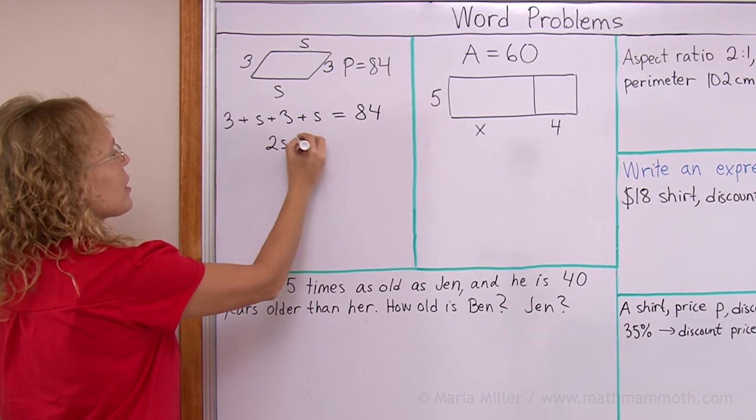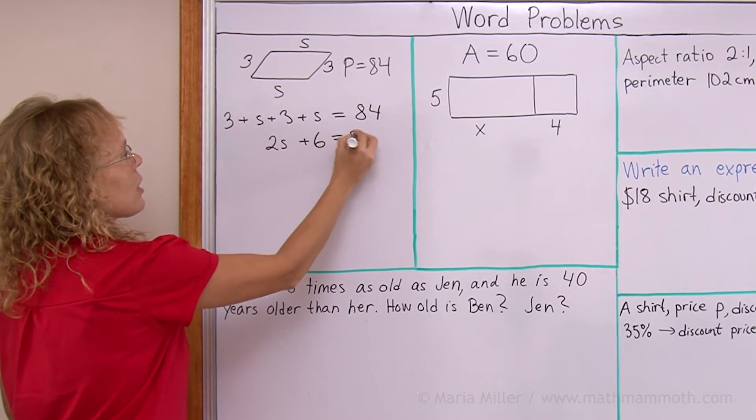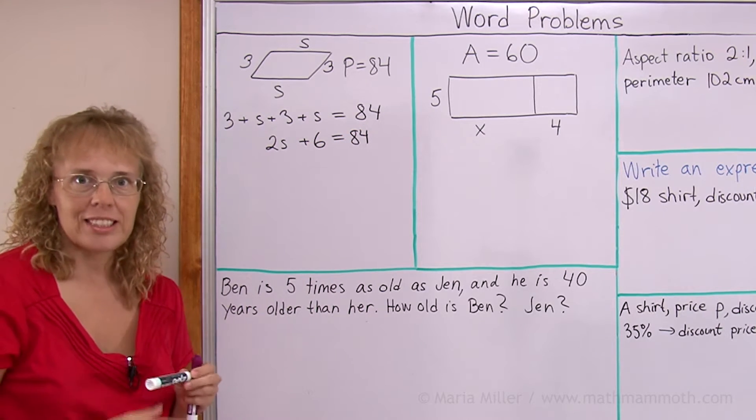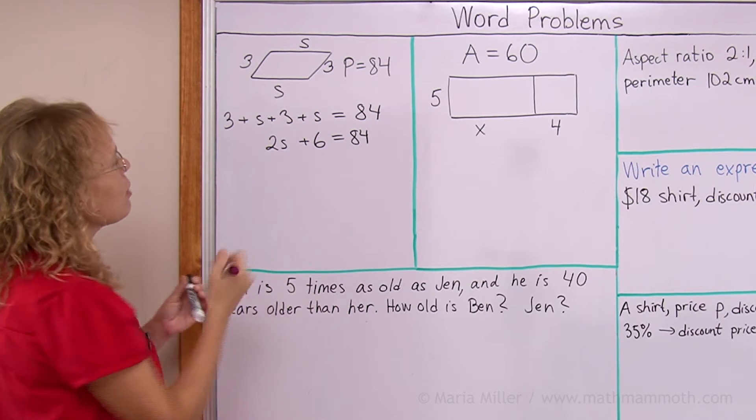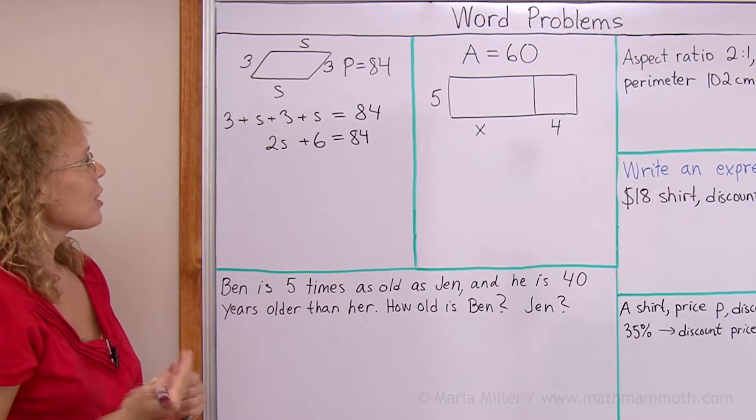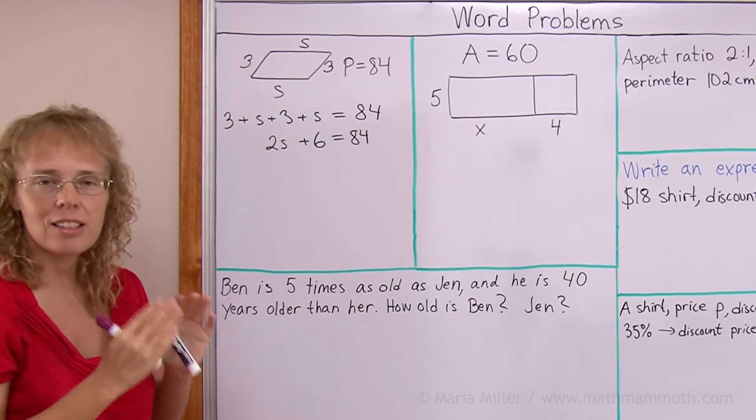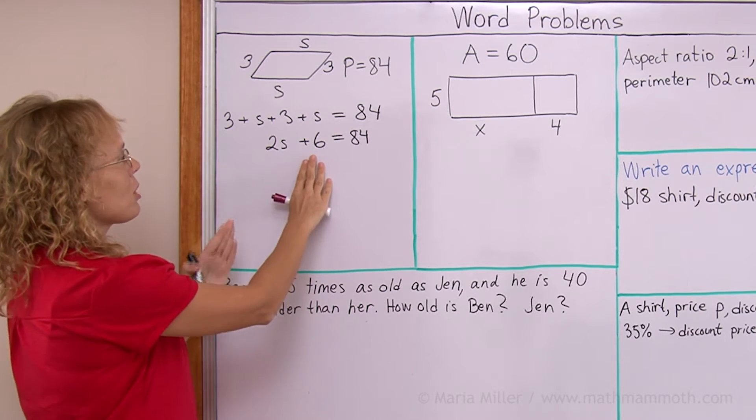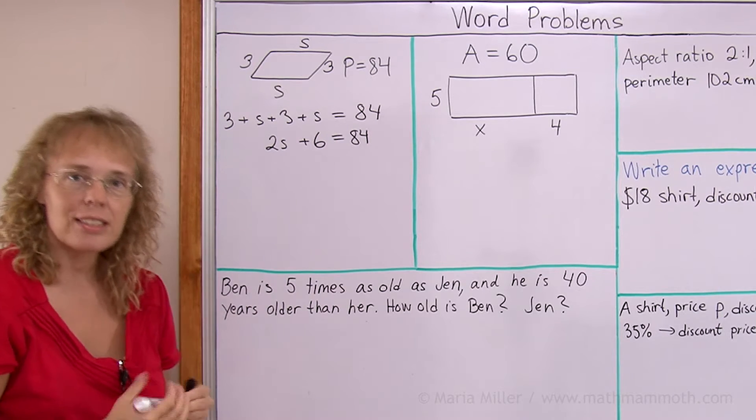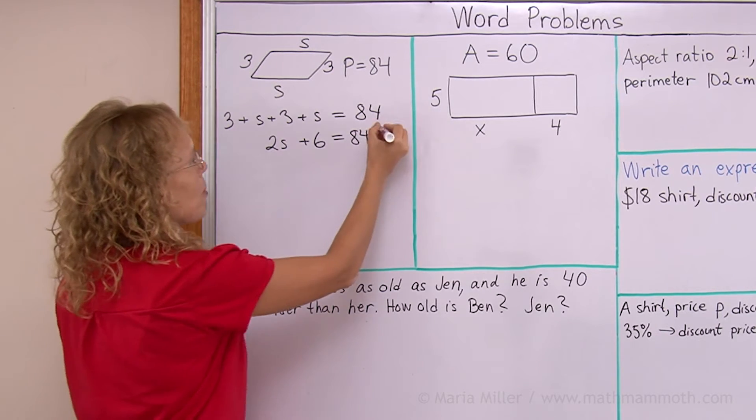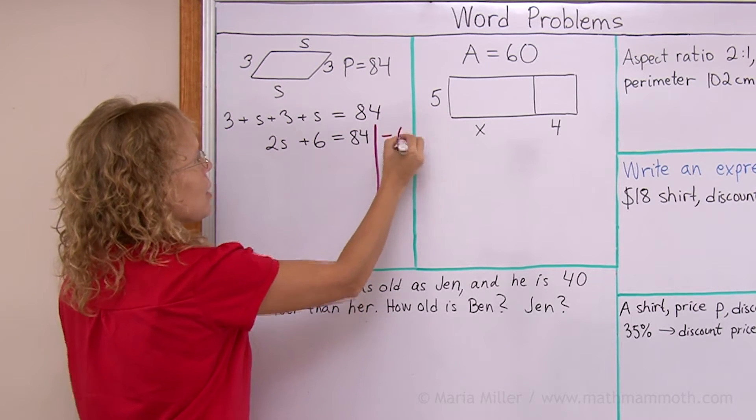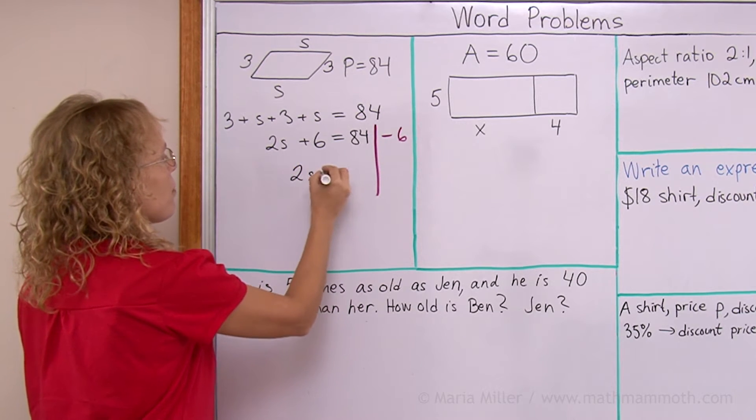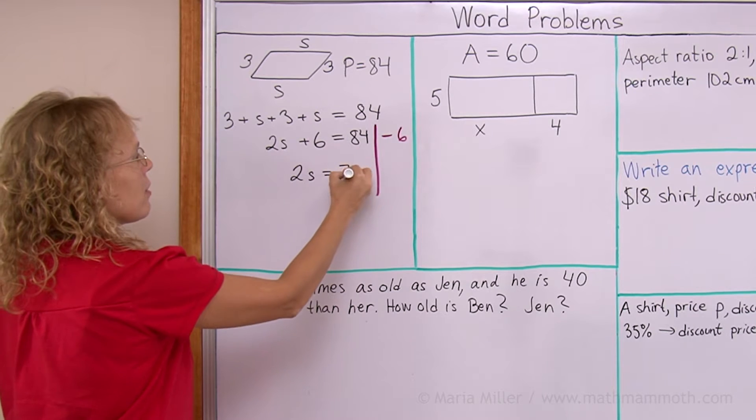And now, we use our equation solving skills. How do you solve this kind of equation? We want to isolate a variable on one side. So we need to do something to this plus 6. We will subtract 6 from both sides. I'll make my marginal note once again. Subtract 6 from both sides. So that leaves 2s alone. And over here, 78.